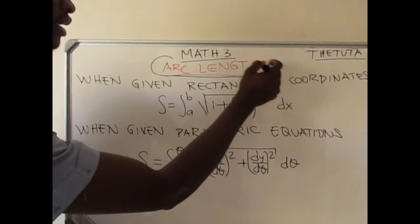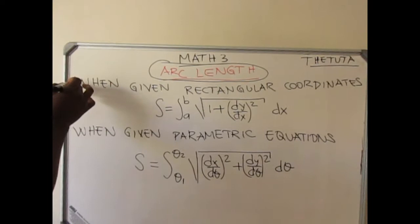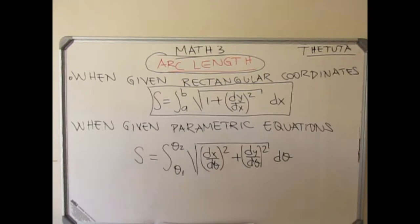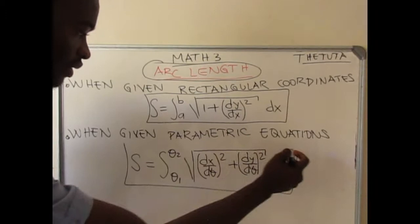On today's lesson, it's going to be all about arc length. We have two formulas that you have to keep in mind. The first one is when it's given as a rectangular coordinate — we're going to use this formula. And when it's given as a parametric equation, you need this formula.